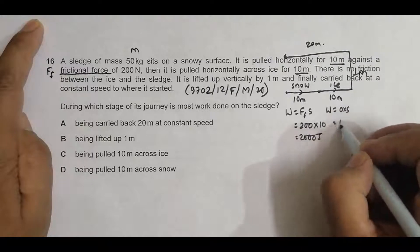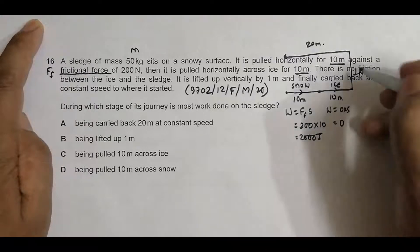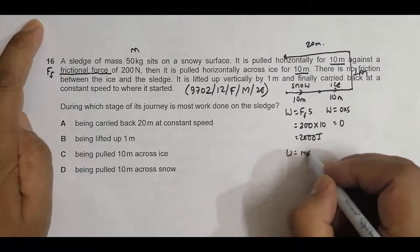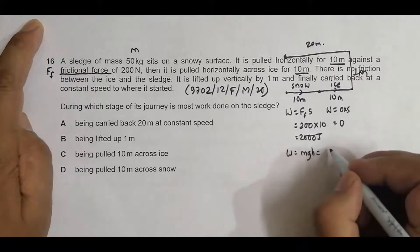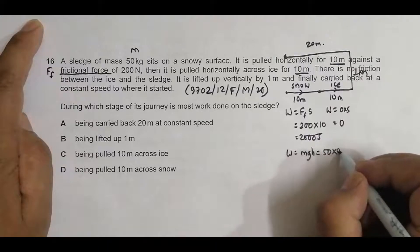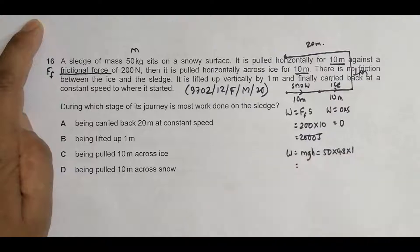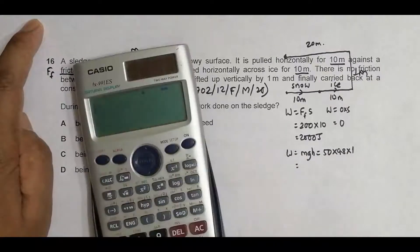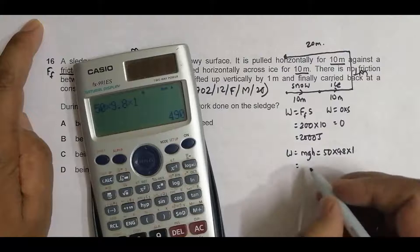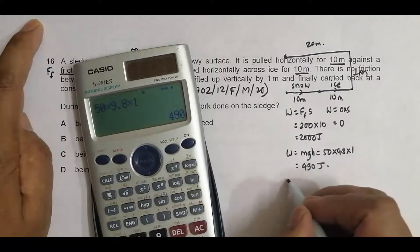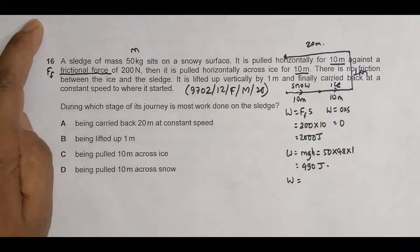Then we have to lift it by one meter, so the work here equals M times G times H. M is 50, G is 9.8, and H is 1. So it is 50 × 9.8 × 1, which equals 490 Joules.